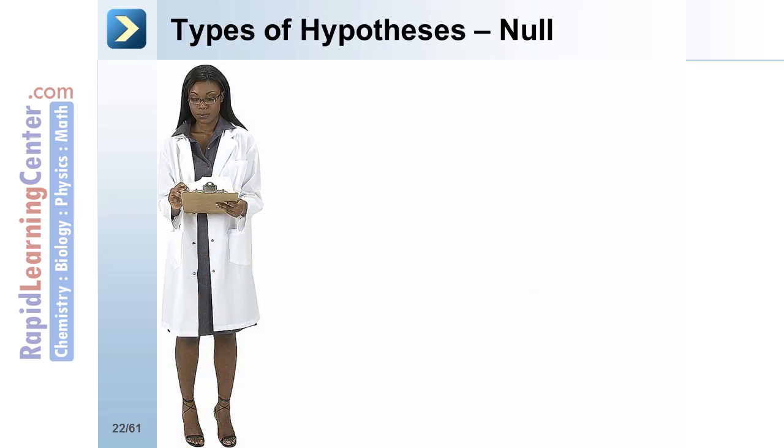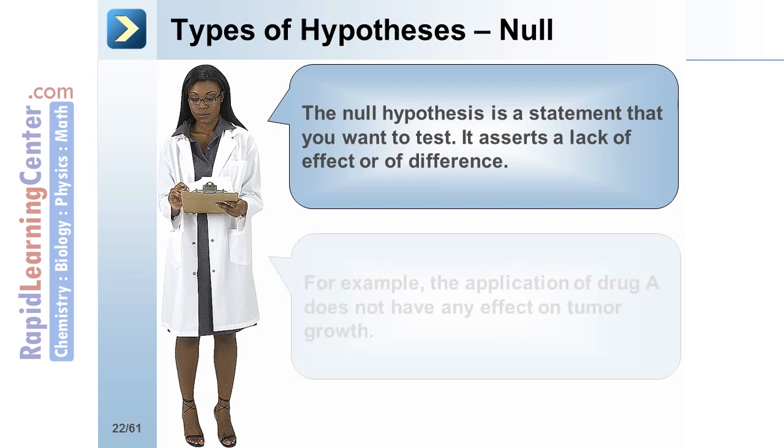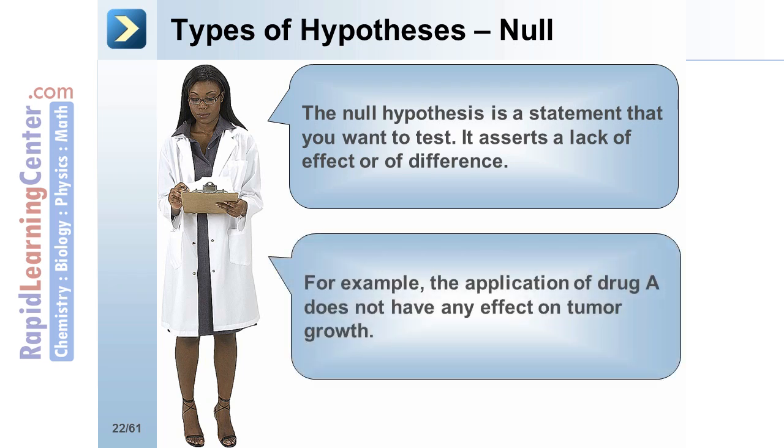We just discussed how the chi-squared test is used to compare observed data with expected data from a scientific hypothesis. There are two essential types of hypotheses: null and alternative. The null hypothesis is a statement that you want to test. It asserts a lack of effect or of difference. For example, the application of drug A does not have any effect on tumor growth.